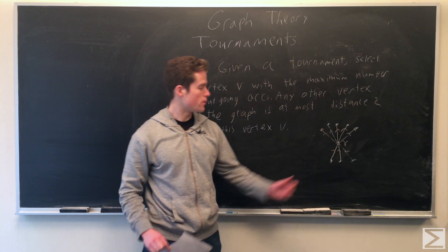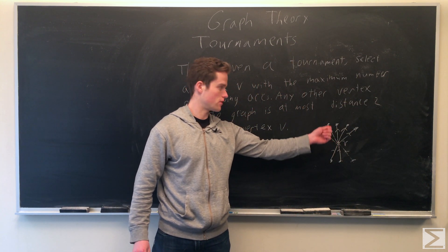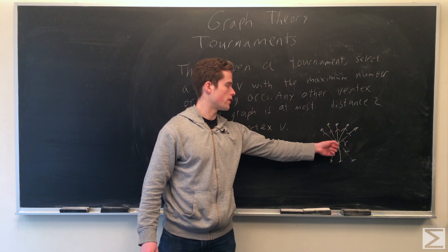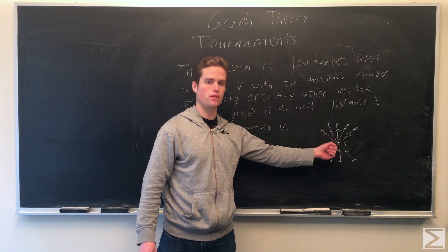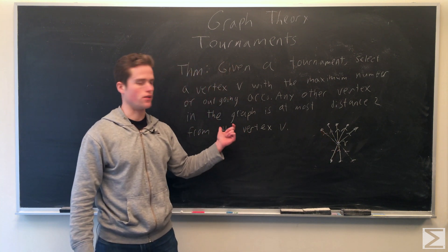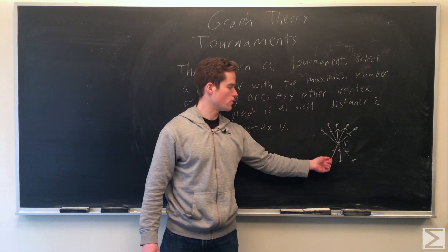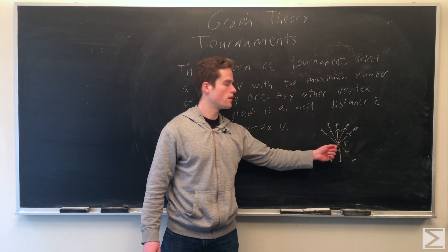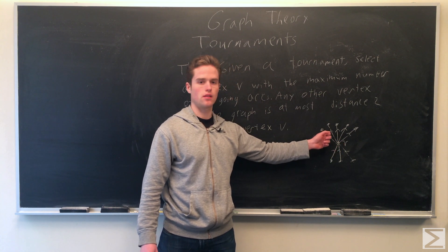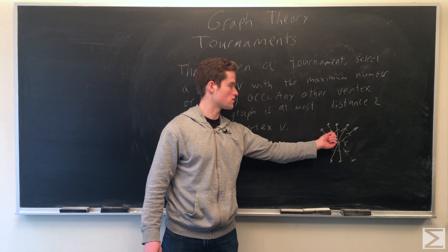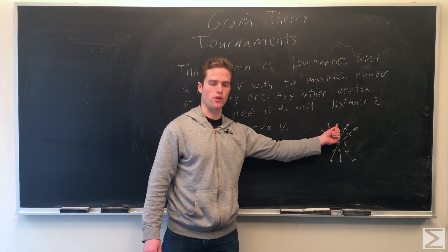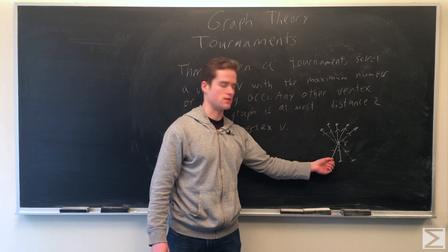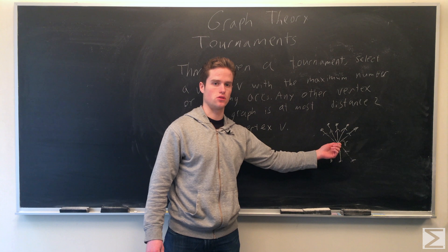So say we have vertex v, it has the maximum possible outgoing number of vertices. First note, all the vertices adjacent to it on outgoing edges are distance 1 from the vertex, so these fit in our theorem. And so we just want to prove that all of the ingoing vertices — the vertices going into v — have one of these vertices that are distance 1 from v. We can find an outgoing arc to any one of these ingoing vertices such that the distance from these ingoing vertices is in fact just 2.